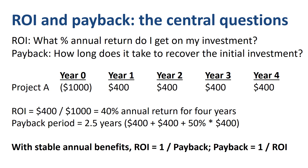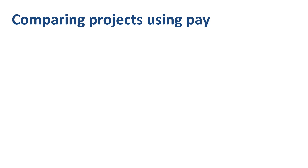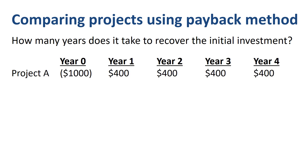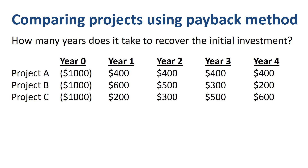Both return on investment and payback are simple to understand, but their ability to deal with complexity differs. What if we have multiple projects in our company that we want to force rank? We only have $1,000 of investment money to spend. Which project is financially speaking the most attractive? In total, for the full 4 years combined, each of the three projects has $1,600 worth of cumulative benefits, but the timing of these benefits varies.